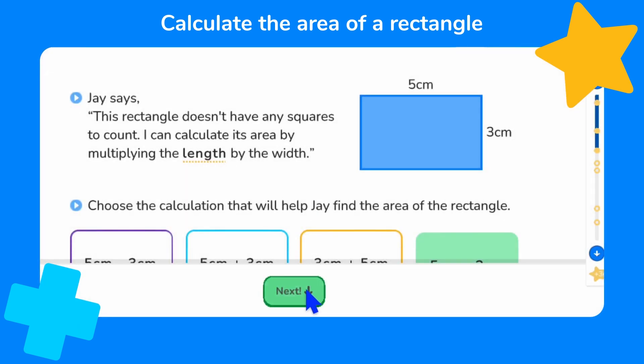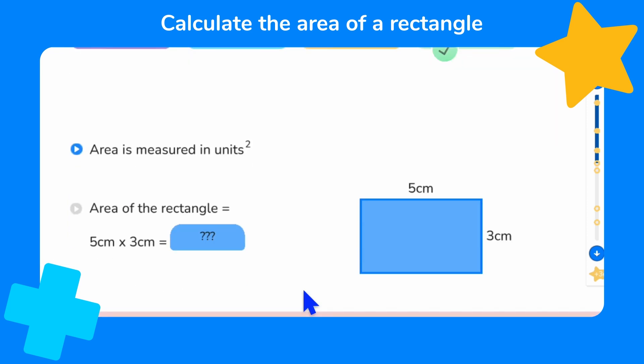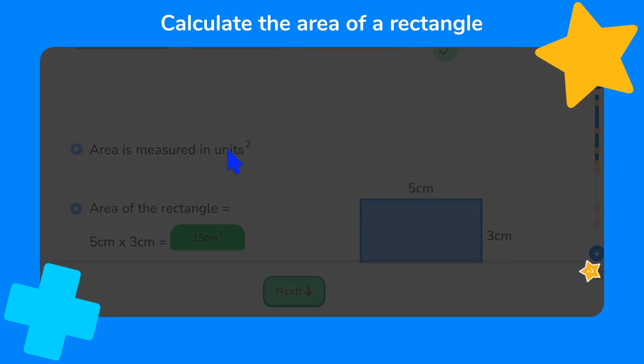Excellent, that's another doodle star. Here we're told the area is measured in units squared. We need to choose the answer to five centimeters times three centimeters. We know that five times three is fifteen, but we also know that area is measured in units squared. So the answer must be fifteen centimeters squared. Excellent.